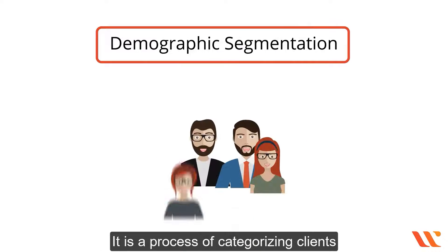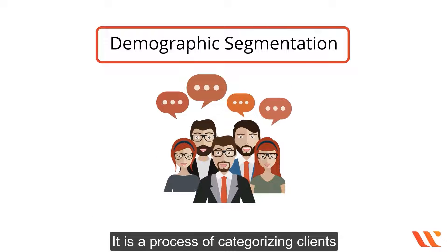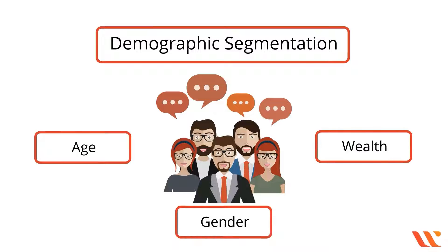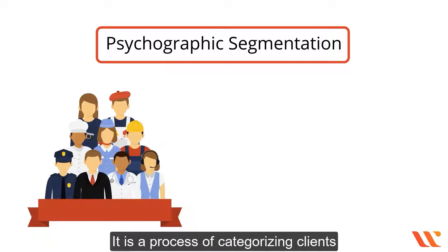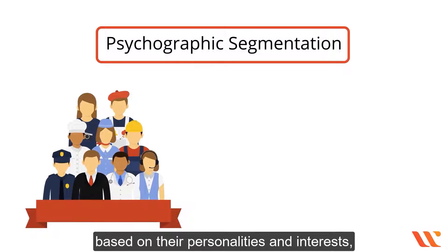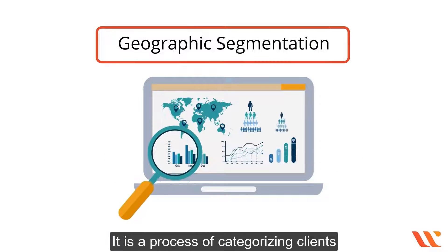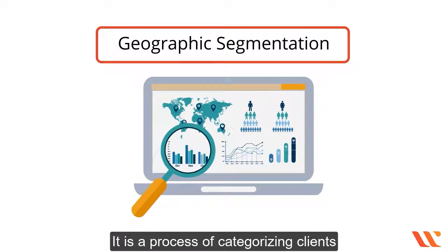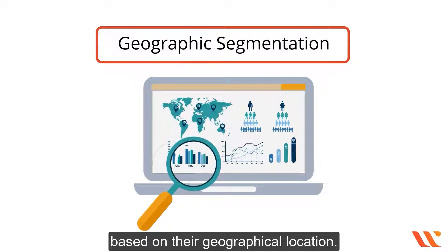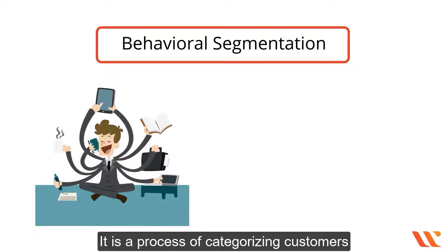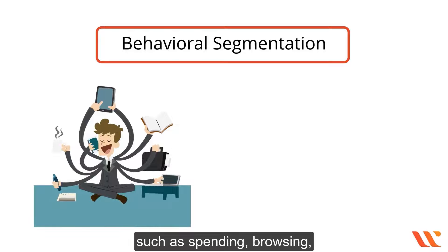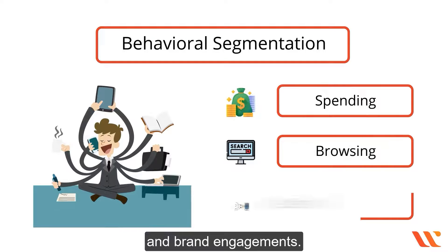These are: demographic segmentation — a process of categorizing clients based on non-personal characteristics such as age, gender, or wealth; psychographic segmentation — categorizing clients based on their personalities and interests such as religious beliefs, hobbies, and life goals; geographic segmentation — categorizing clients based on their geographical location; and behavioral segmentation — categorizing customers based on previous behaviors such as spending, browsing, and brand engagements.